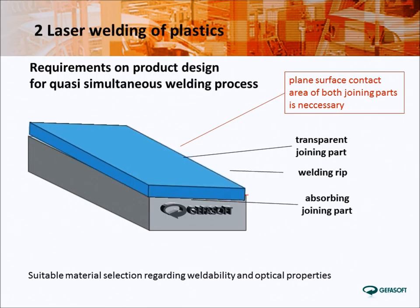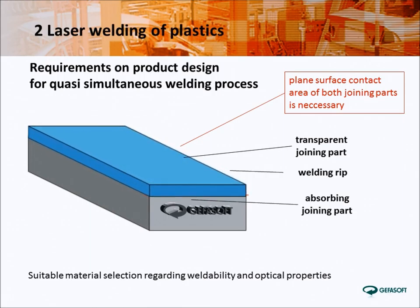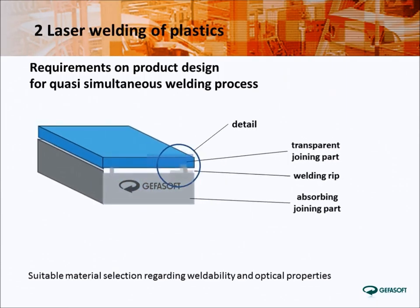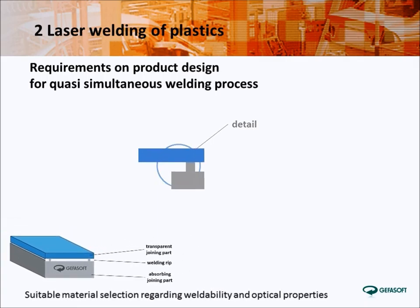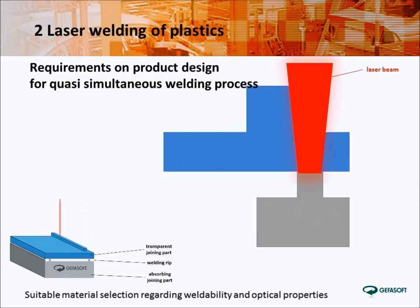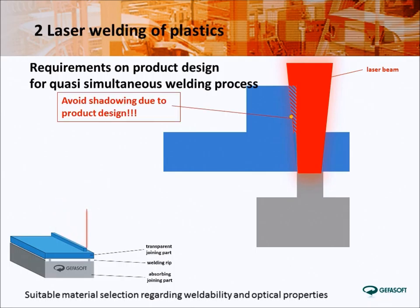Furthermore, surface contact of both joint partners along the welding contour and a plain surface at the contact area is necessary. As a cross-section, the welding area can be shown like this. It is important that shadows or reflections of the laser beam are avoided by the product design, which can be achieved by simple methods in most cases.